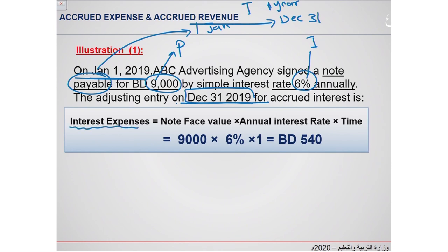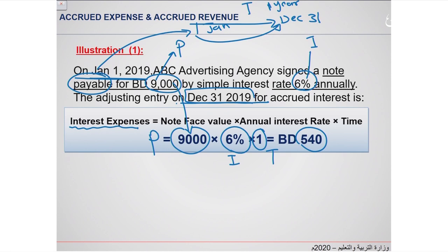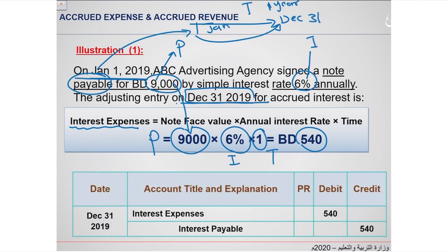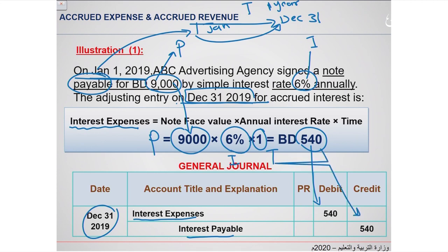How to calculate the interest expense? Take $9,000 — this is the principal (P) — multiplied by 6% (I), multiplied by 1 year (T), because from January 1 until December 31 you get $540. Now, how to prepare the general journal? Put the date December 31, 2019. Put interest expense on the debit side and interest payable on the credit side, both for $540.